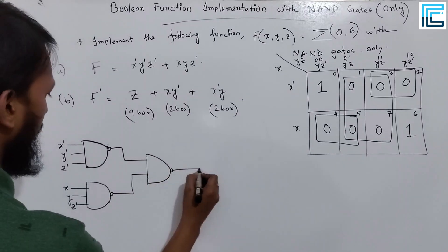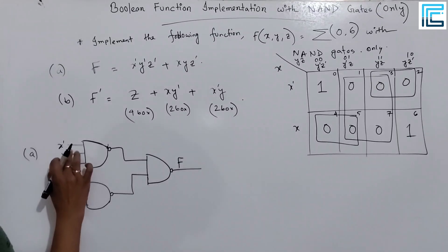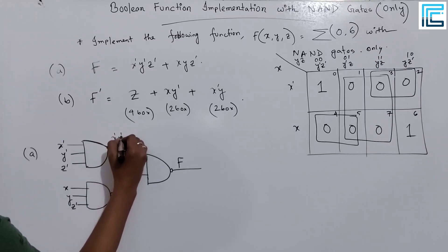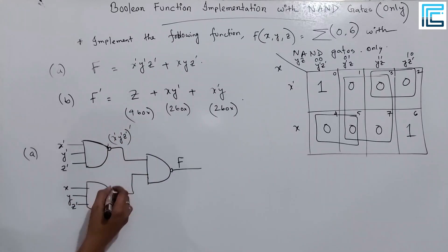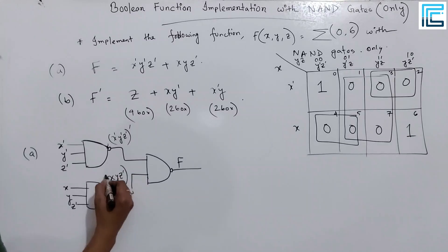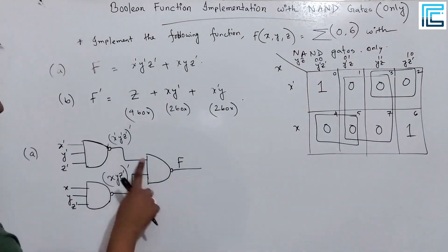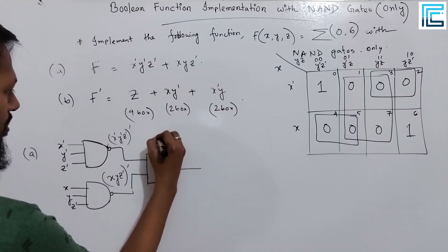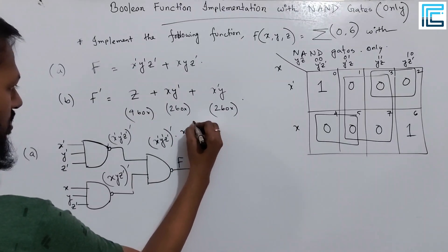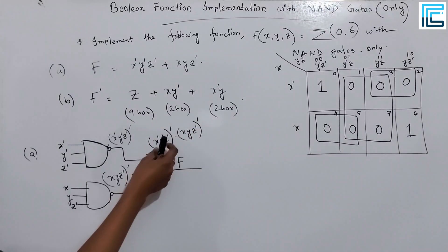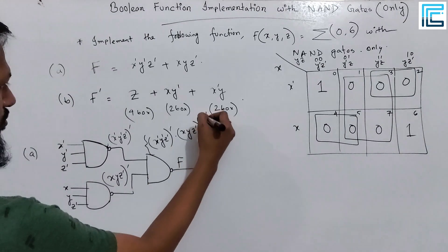The inputs go into the NAND gate. The final output of the function is net f. The outputs are x prime y prime z prime and x·y·z prime. Finally, the function output is equal to the combination — so the output is x prime·y prime·z prime NAND-ed, then inverted, combined with x·y·z prime similarly.